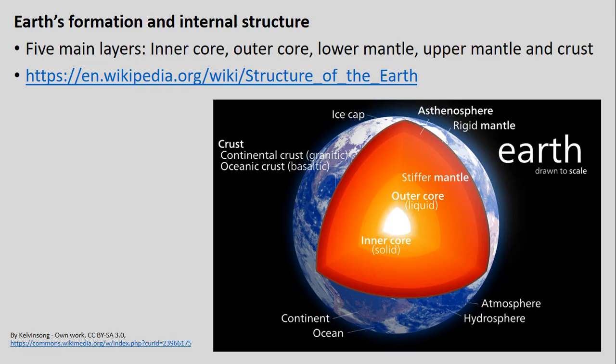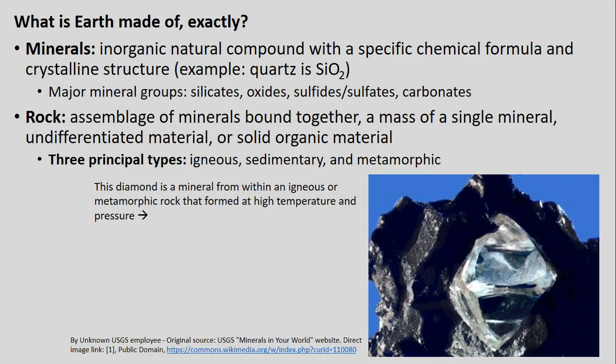Today we have five main layers that we can distinguish. Earth is mainly made of minerals and rocks — and those do have a different distinction. Minerals refer to inorganic natural compounds with specific crystalline structures, whereas rock is essentially an assemblage of multiple minerals bound together into a single material.